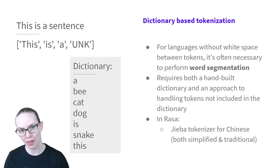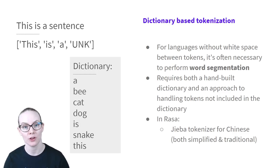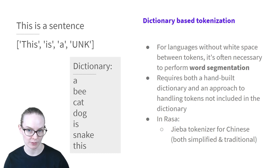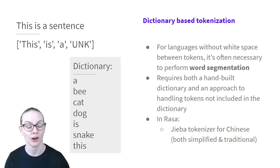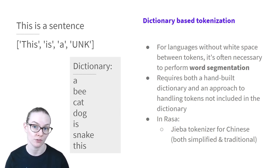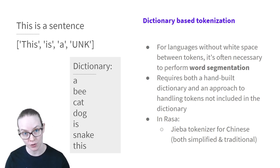A slightly more elaborate approach is dictionary-based tokenization. This is where you have a dictionary and then try to find matching tokens in your sentence. For languages that don't have white space between words, there's also generally an additional step of word segmentation. This is where you not only identify which sequences of characters could be individual words, but also resolve the resulting ambiguities.